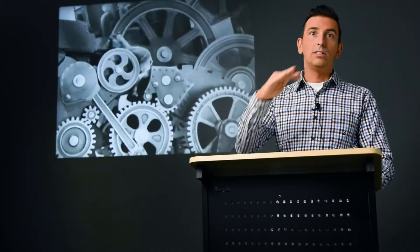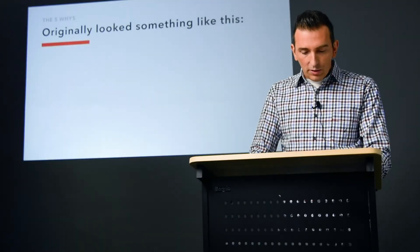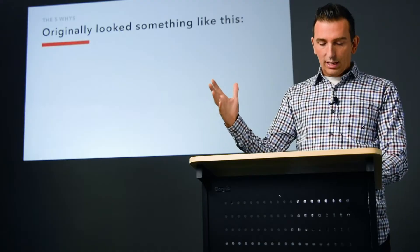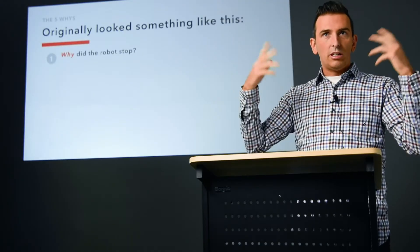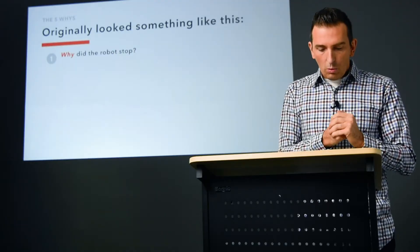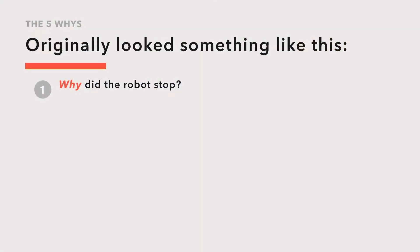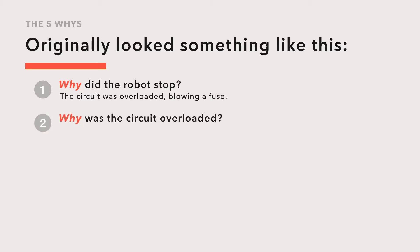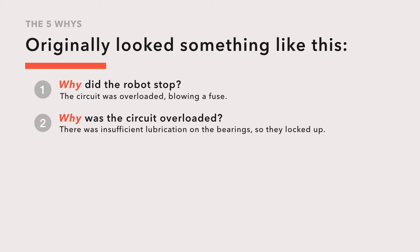If there was an issue that came up, how could they fix that problem so it wouldn't happen again and continue their operation smoothly? For them it would look something like this: a problem would happen, and the first question would be — why did the robot stop? Well, the circuit was overloaded and it blew a fuse. So then the next question: why was the circuit overloaded? There was insufficient lubrication on the bearings and it locked up.